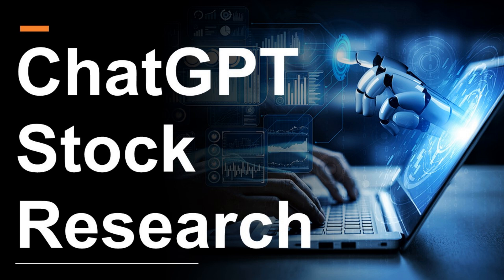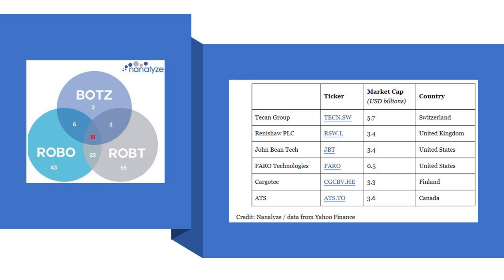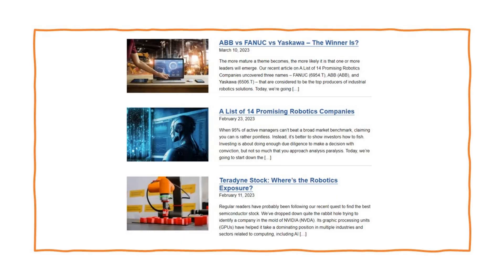ChatGPT for stock research is the topic of today's presentation. If you've thought about using ChatGPT to research stocks — not to pick stocks, but to research them — then you'll want to watch this. This research assignment related to a series of articles where we look at stocks found in common amongst the two largest robotics ETFs. There happen to be 18 of them, and we take that list and research the pure play exposure from each company — firms like ABB, Fanuc, Yaskawa, and others.